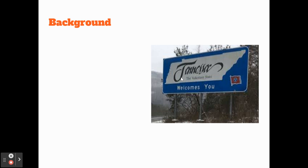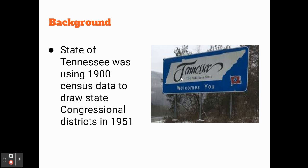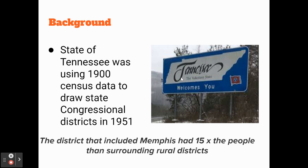Here's the relevant background information to Baker v. Carr. The state of Tennessee was using census data from 1900 to basically draw the state congressional districts in 1951. This basically meant that you were using outdated information to draw these districts — not the most recent census information. Over this time period between 1900 and 1951, the urban areas of Tennessee had grown significantly.